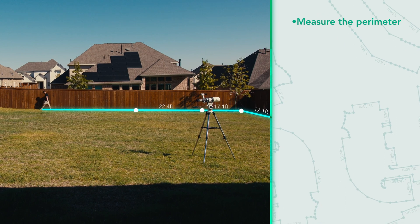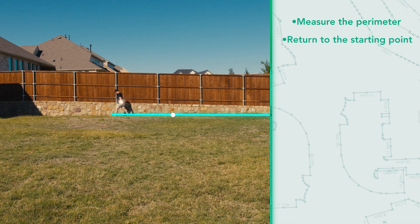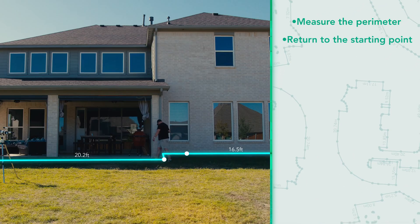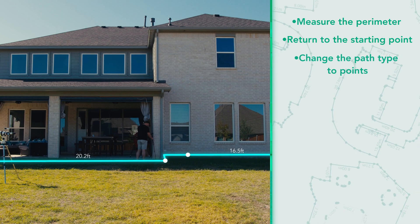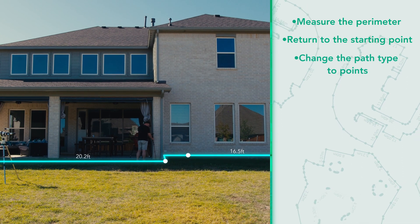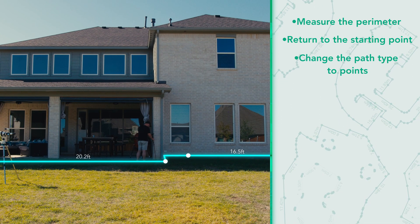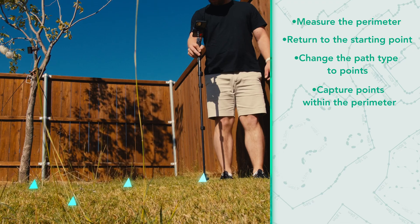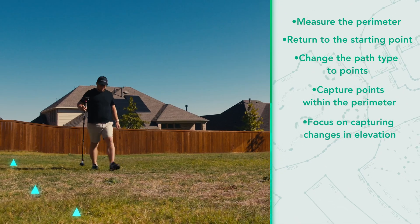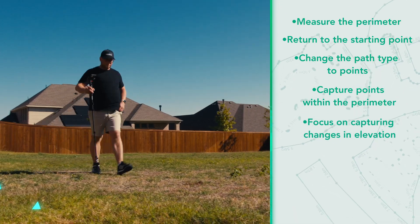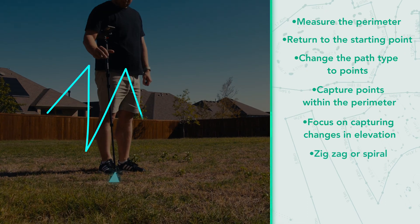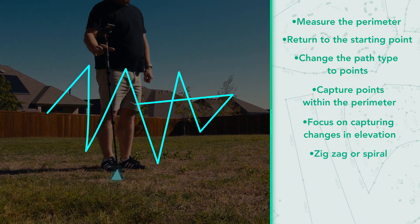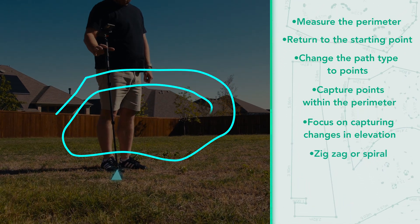First, measure the perimeter and return to the starting point without ending the measurement. Change the path type to points, then capture points within the perimeter, focusing on capturing changes in elevation across the space.